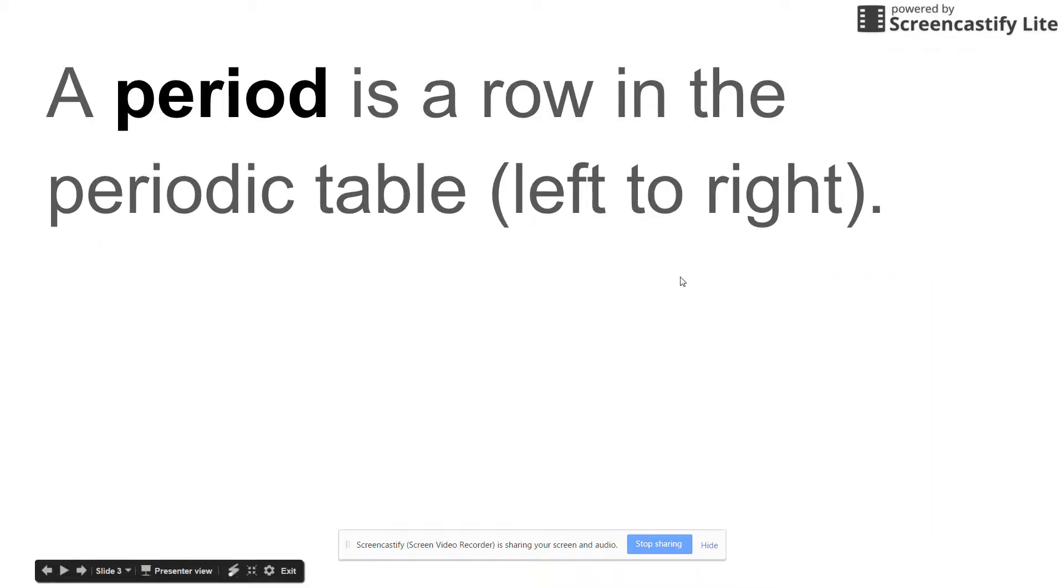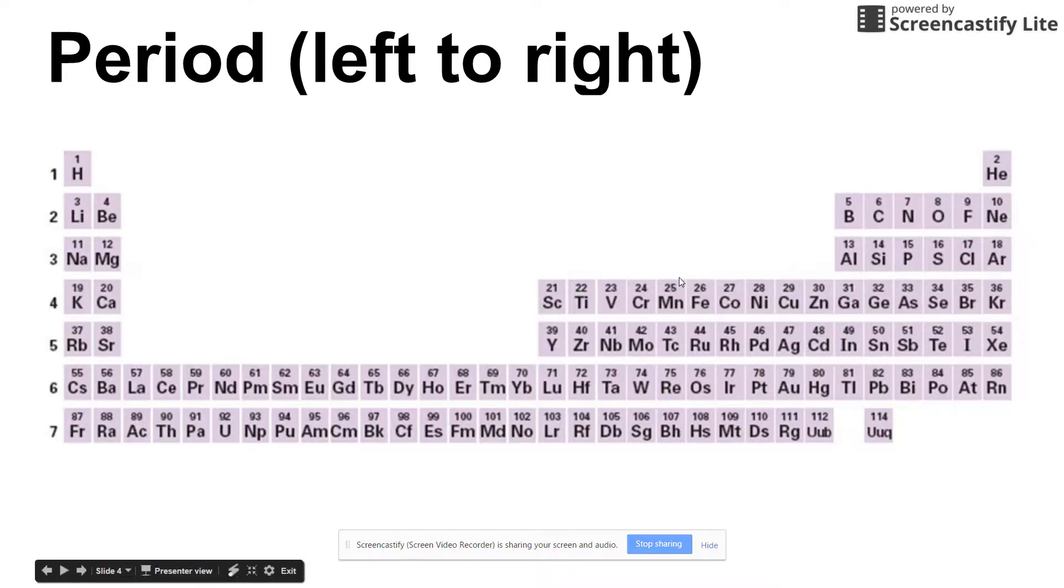There's some terminology that we're going to use to refer to the periodic table that you have to understand. The first one is called a period, and that refers to a row in the periodic table, from left to right. If you look at the periodic table, this periodic table is expanded. Usually this section is cut out of it so it's more condensed, the one you'll be using.